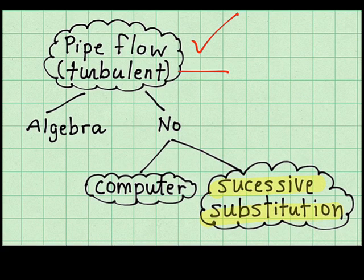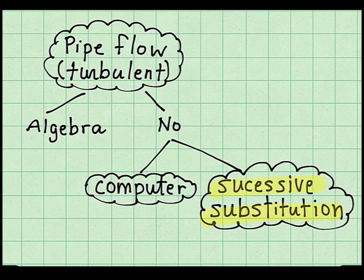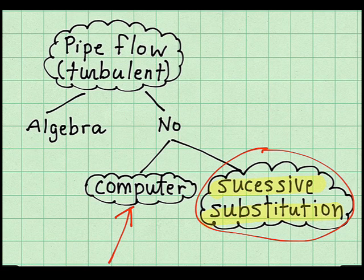When solving pipe flow problems with turbulent flow, sometimes problems can be solved by algebra, but other times the equations are coupled and nonlinear. This is such a problem, so it cannot be solved with algebra alone. By far the easiest approach is to program the equations on a computer. However, I'm going to show an older technique called successive substitution, because it can be done with a hand calculator or an Excel spreadsheet.